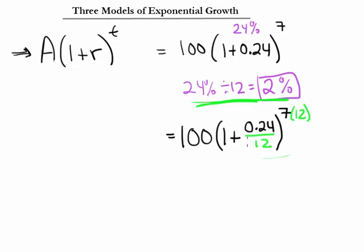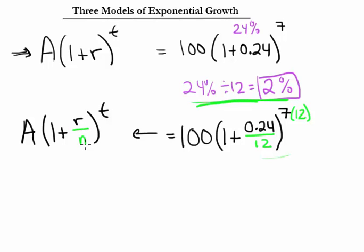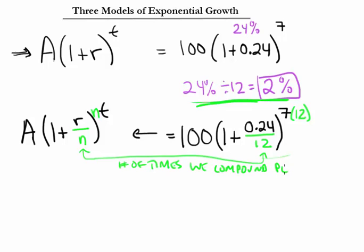From this, we can write a general model for compounding at different intervals. The model is A = P(1 + r/n)^(nt), where the 1 + r part is unchanged, but we add n — the number of times we compound per year.